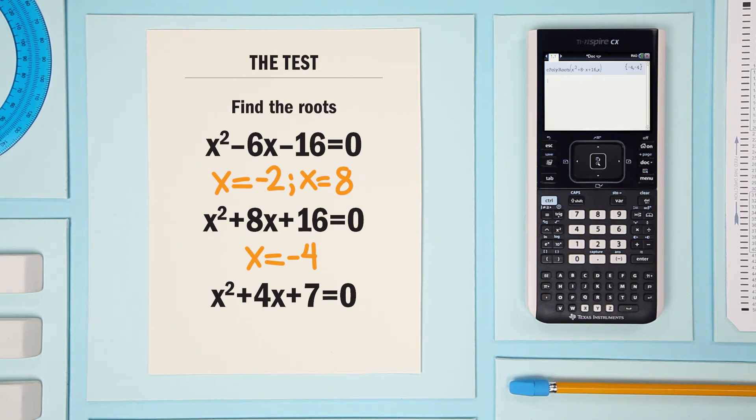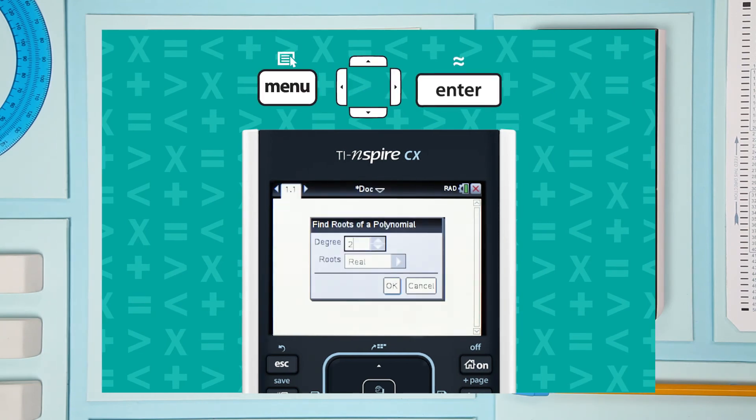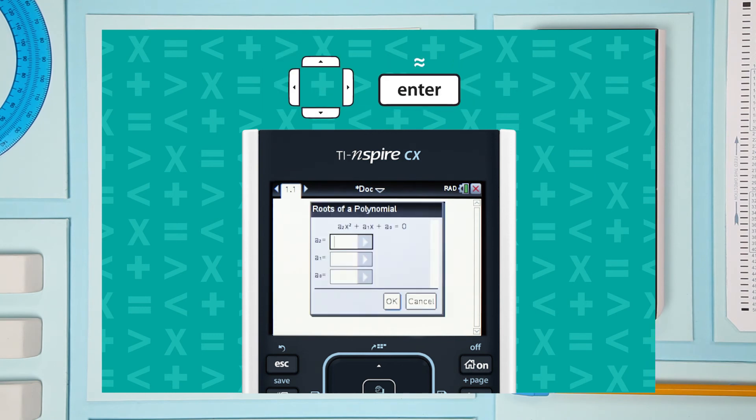Last one. Follow along. Open the app. Make sure you use a second-degree polynomial and show complex roots. Enter the coefficients 1, 4, 7.